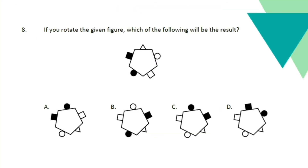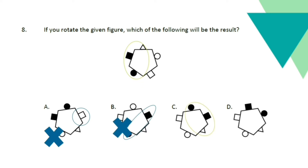Next number: if you rotate the given figure, which of the following will be the result? Again, we will assign our marker. This time I'm going to mark the three shapes beside each other — circle, square, and triangle. In letter A, we can find the pattern we marked, however the square is not shaded. In letter B, the circle and the square are not beside each other, so this is wrong. In letter C, we can see our markers — correct — but do not stop there. You also have to look at the other shapes to confirm they are identical. In letter D, the order of the marked pattern is still off. So the answer must be letter C.